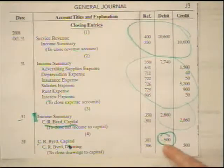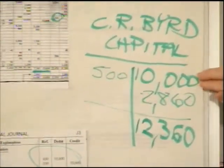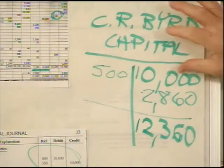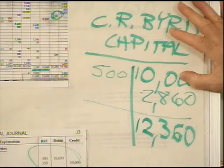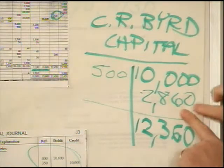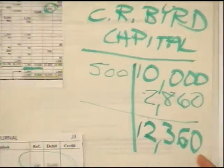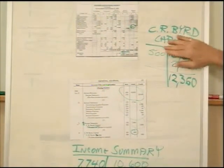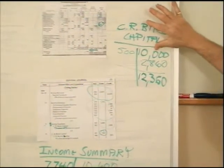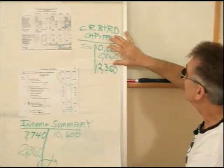Here's a T account analysis of the capital account — CR Byrd capital. It started off with $10,000 at the beginning of the year or month, which is also on that balance sheet worksheet. That amount sits there until we do our closing entries at the end of the year. Our closing entries close out the revenue and expense accounts back to zero, put in our net income, and pull out our drawing. The net effect is we now have a CR Byrd capital of $12,360. Looking at the statement of owner's equity, this is exactly the balance shown — capital at the beginning was $10,000, we added net income of $2,860, subtracted drawing of $500, and ended with $12,360.